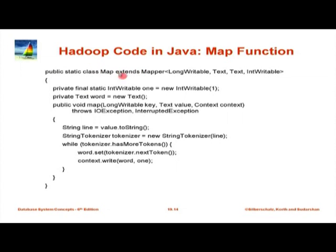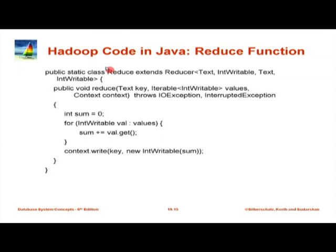Similarly, the reduce class extends the reducer interface. There can be many map and reduce classes in one job with different names — the class name does not matter. The function inside must be called 'map' or 'reduce' respectively. The reducer takes four type parameters: the reduce input key (Text), the reduce input value (IntWritable), the output key (Text), and the output value (IntWritable). So the word is the key and the integer count is the value for both input and output.